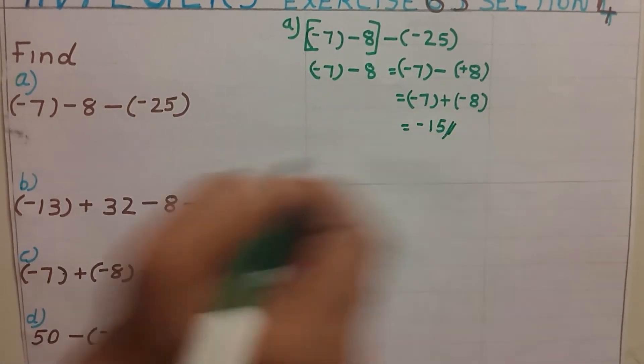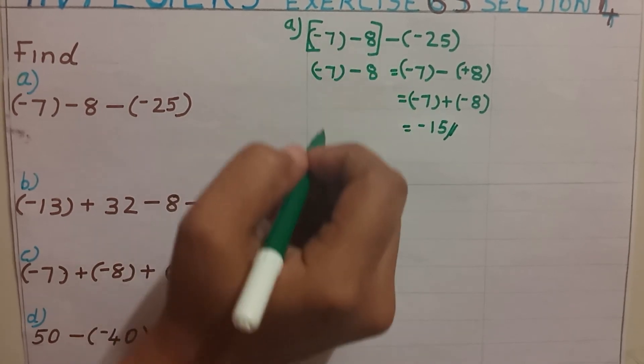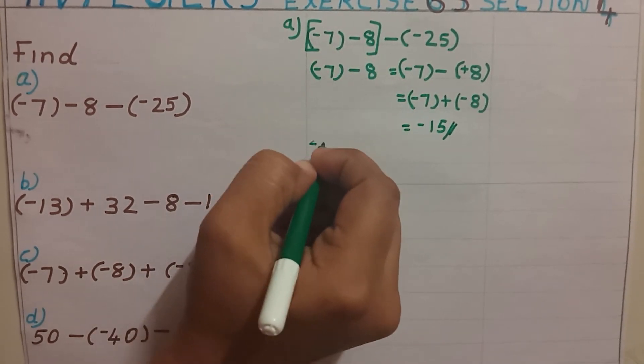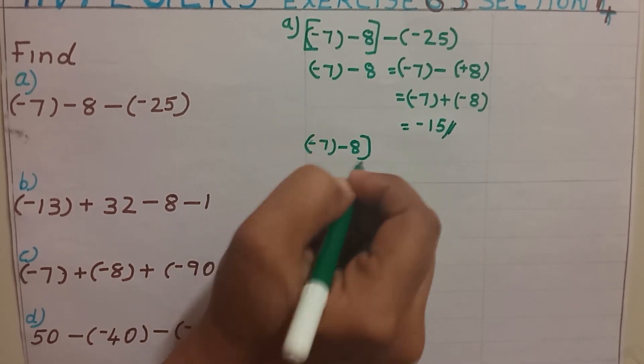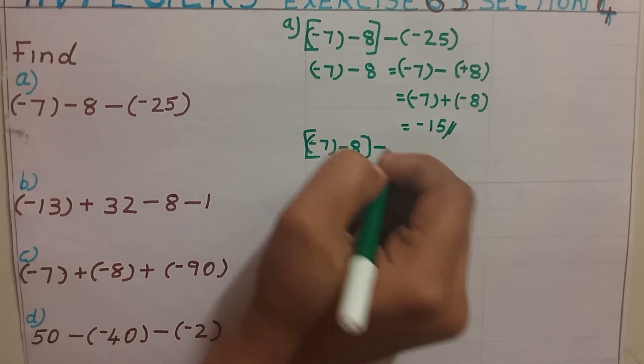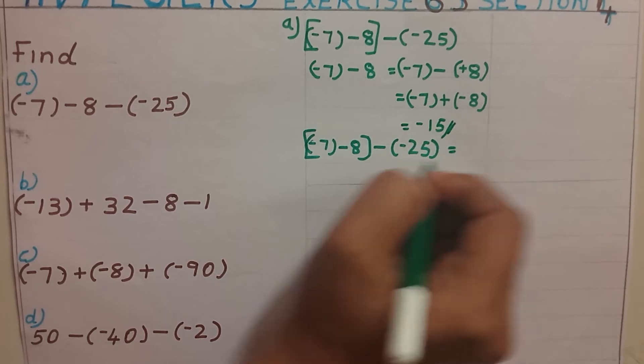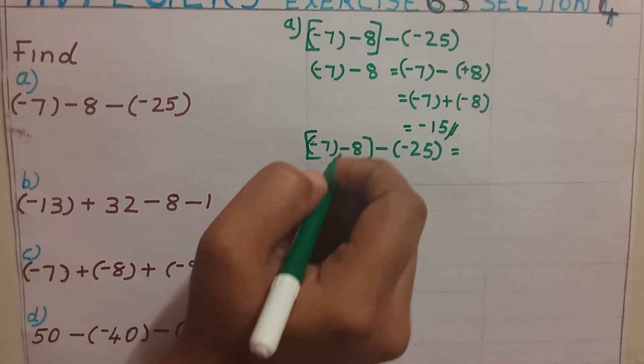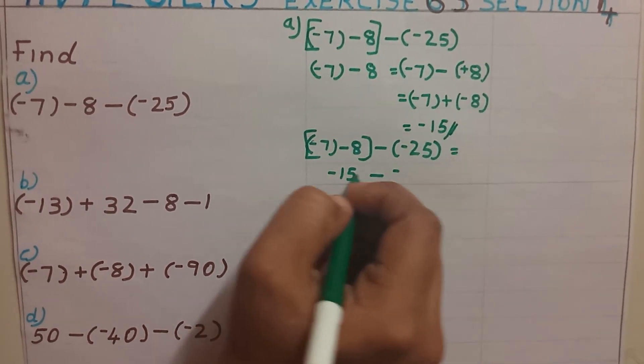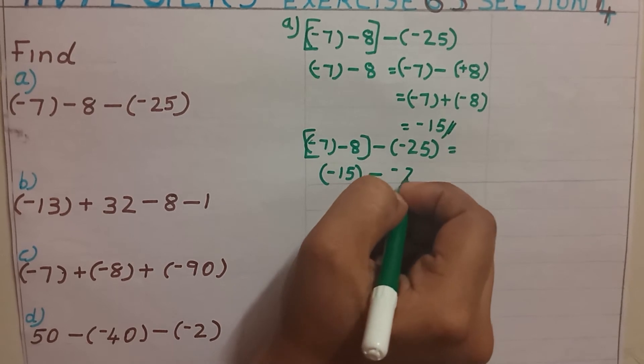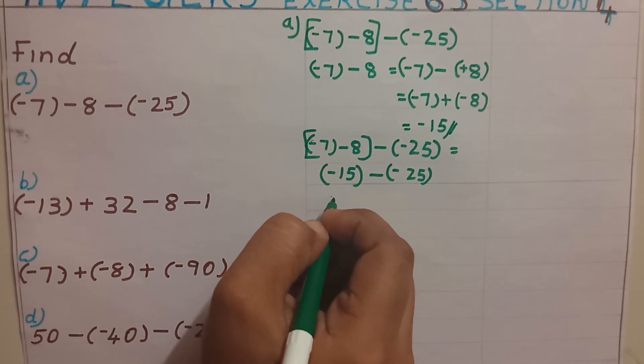So I can rewrite this question as minus 7 minus 8 minus of minus 25 equal to, instead of this bracket, minus 15 minus of minus 25.